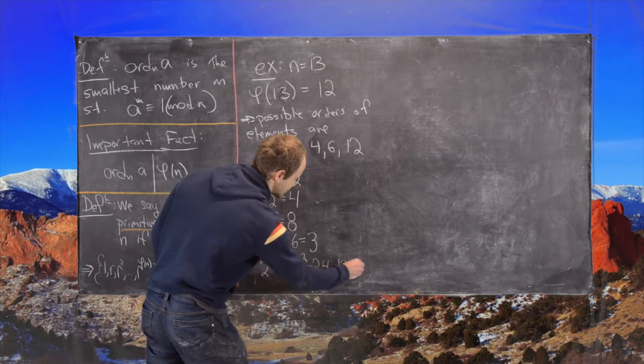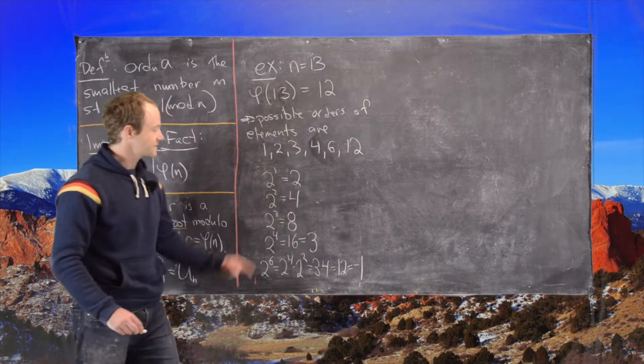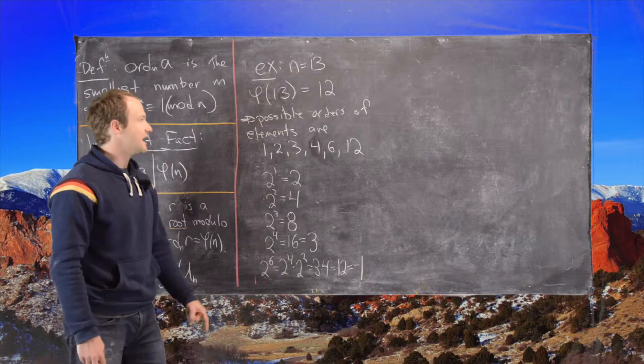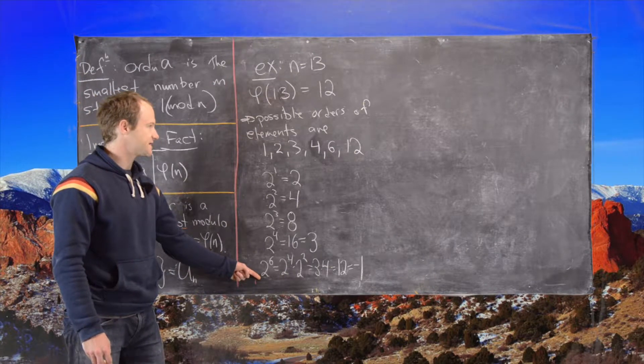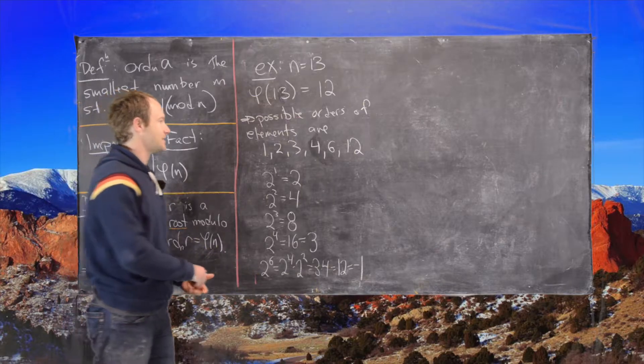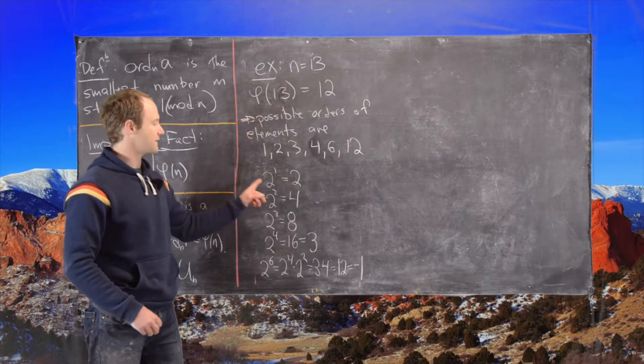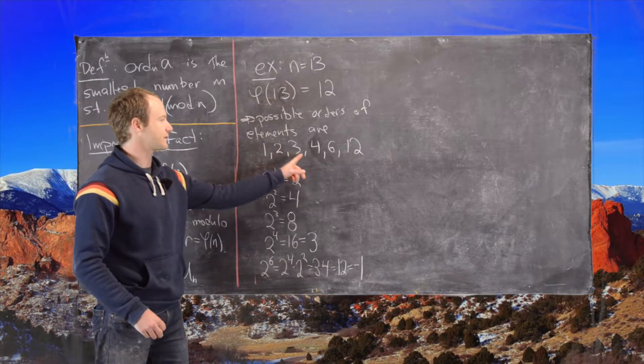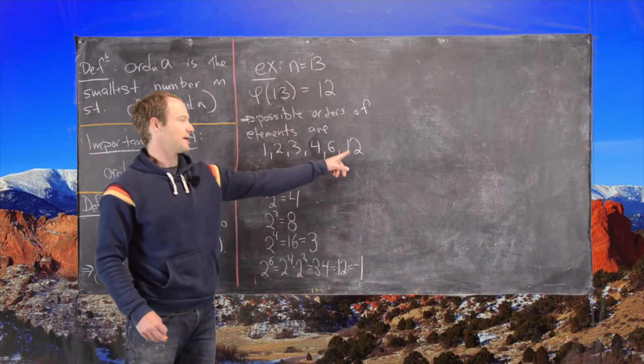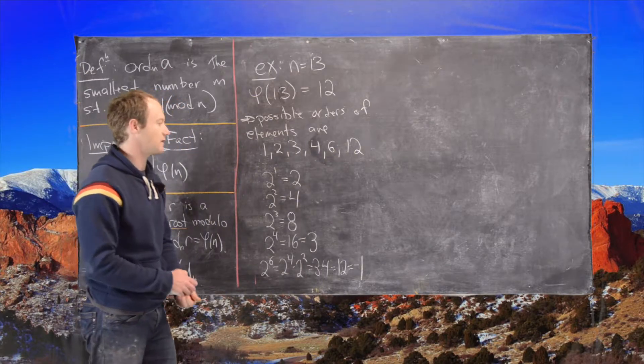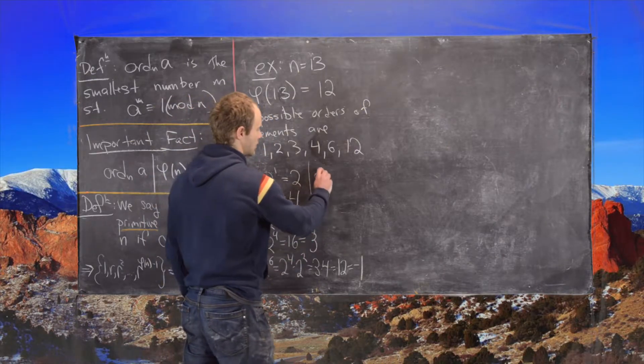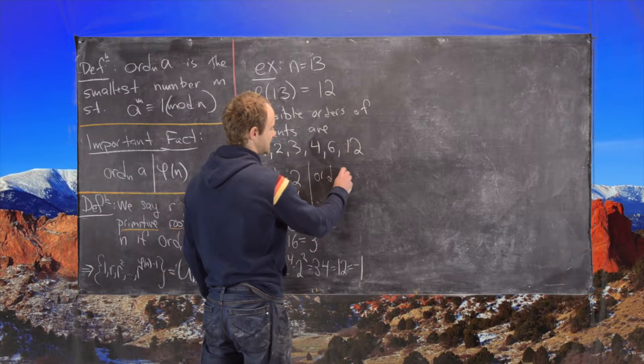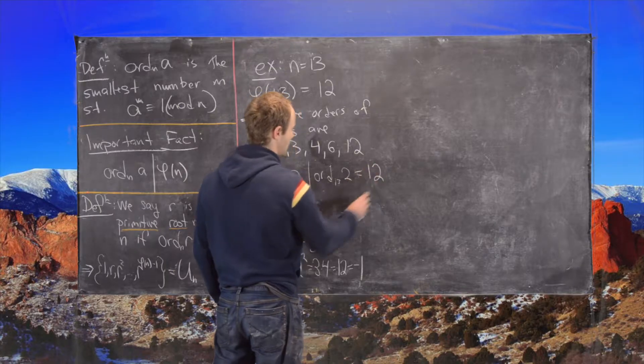So now what we notice here is nowhere on this list is 1. So that means the order of 2 cannot be 1, 2, 3, 4, or 6, so that means the order has to be 12. So what we've just shown is that the order mod 13 of 2 must be 12.